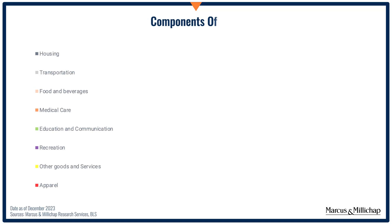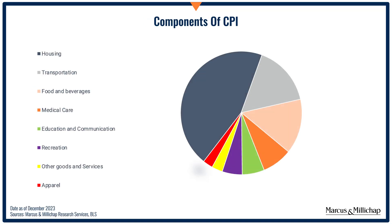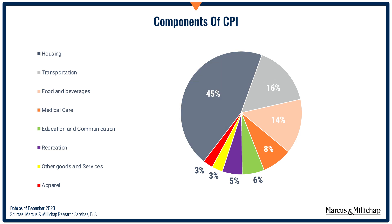CPI includes a variety of things in its basket of goods — things like apparel, recreation, education, medical care, food and beverages, and transportation. But the biggest component of the consumer price index is housing costs, which account for 45% of the total.